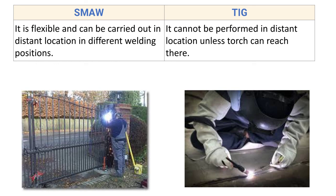TIG cannot be performed in distant locations unless the torch can reach there. The operator has to handle both the torch and the filler, making it quite difficult to work in remote locations compared to SMAW. This concludes the differences between SMAW and TIG welding.